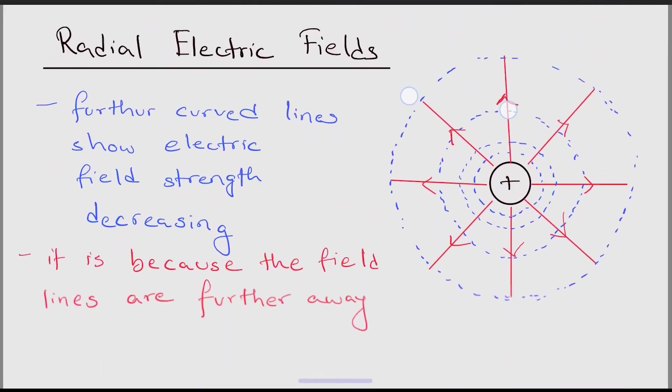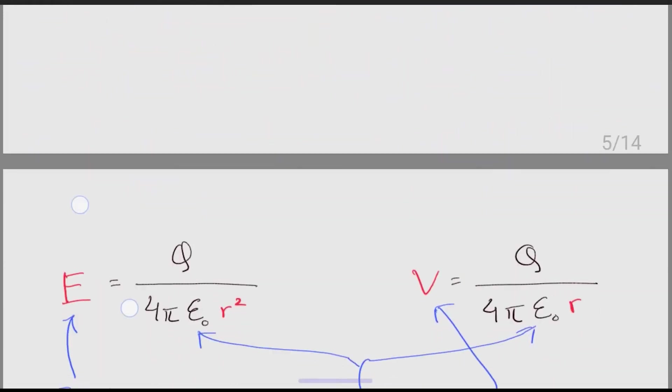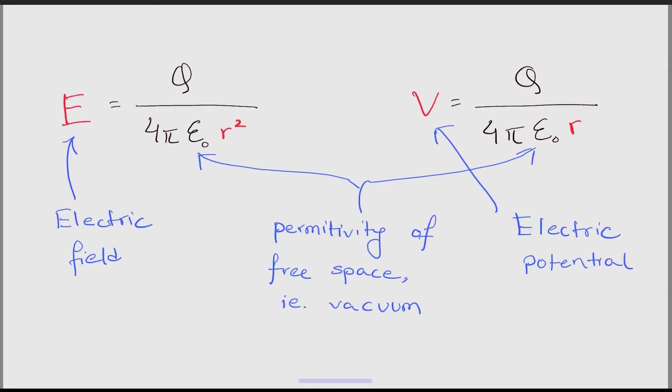The next topic is radial electric fields. Radial means circular. If a small point has a charge, the electric field moves away from it in a circular manner. In this diagram we can see that as we go further, the red lines move away from each other. Due to this, the electric field strength also decreases. That is why you can see the gap between the blue dotted lines are increasing. Moving on, here are two different formulas that students get confused about. One is the electric field with the R square. Another is the electric potential with just R.